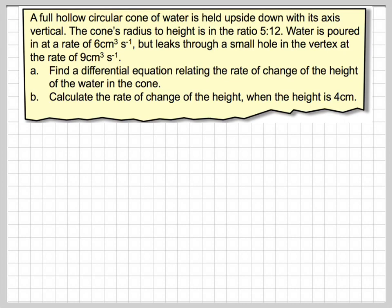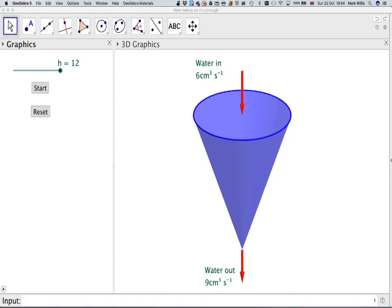Before we do this, let's have a look at what's happening here. We've got a cone full of water, and water is pouring in at 6 cm³/s and pouring out at 9 cm³/s. Let's just think what will actually happen.